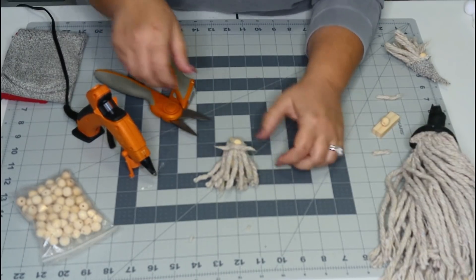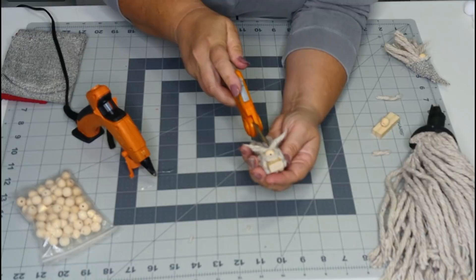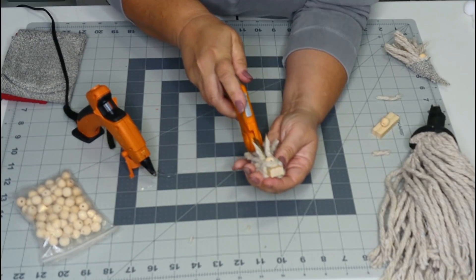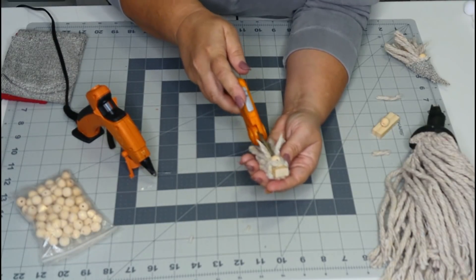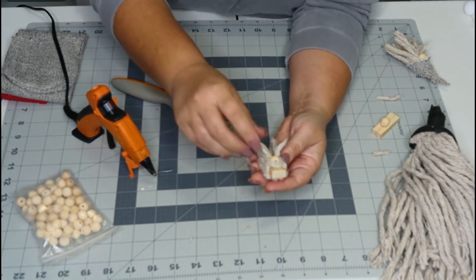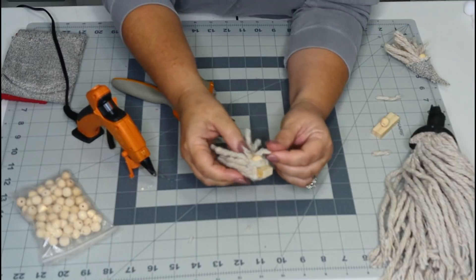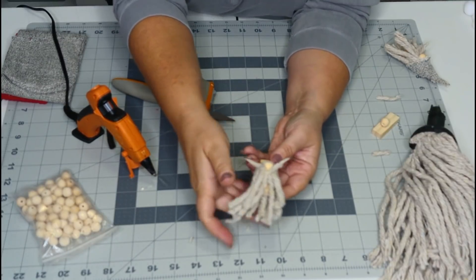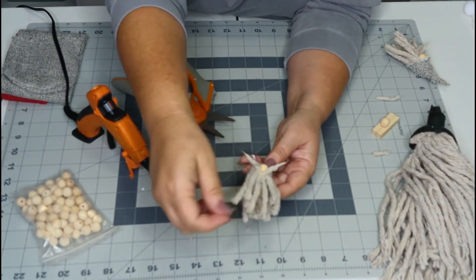And then we'll just twist it like so. I do have my craft sticks that I should be using to hold this down, but I have to find them first. I organized and I can't find anything. I'll put them in a bin somewhere and I haven't found that bin yet. Okay, so now we're ready to give this cute little guy a hat.